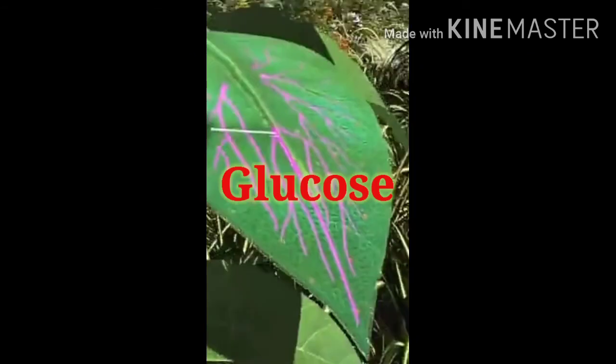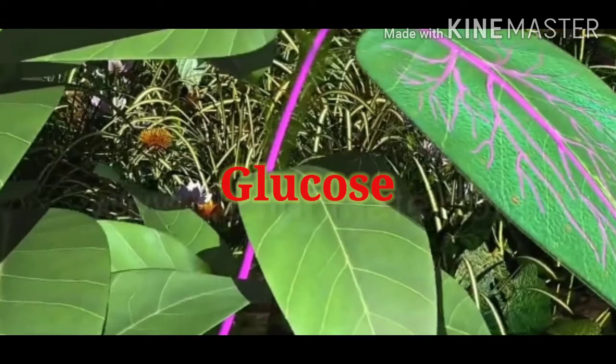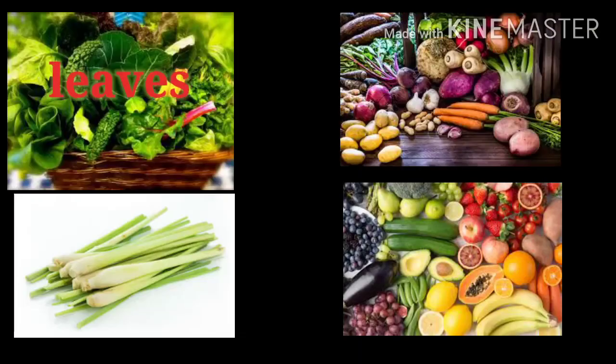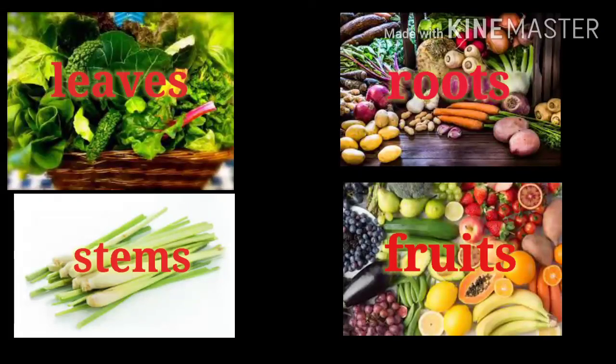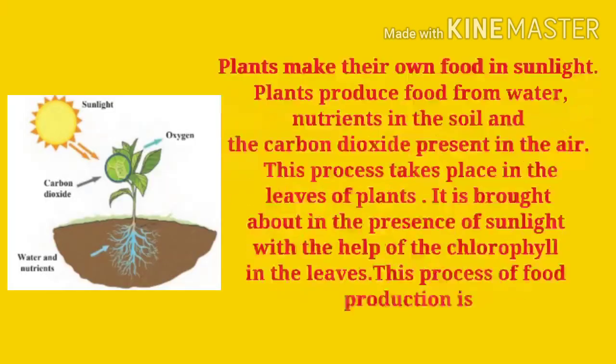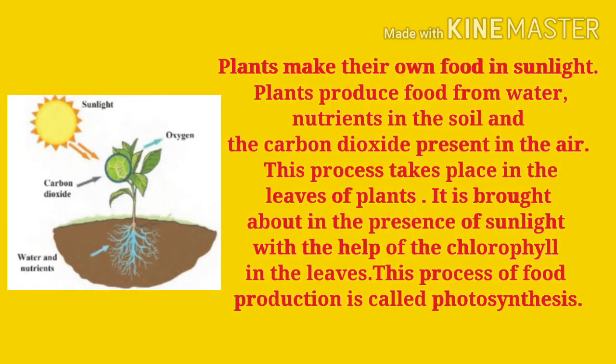The excessive food produced is stored in various parts of plants like leaves, stems, roots and fruits. Plants make their own food in sunlight, producing it from water, nutrients in the soil and the carbon dioxide present in the air. This process takes place in the leaves of plants, brought about in the presence of sunlight with the help of chlorophyll. This process of food production is called photosynthesis.